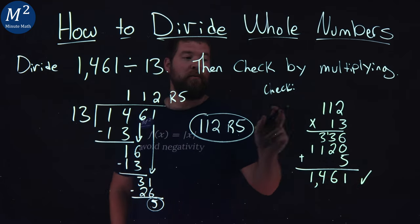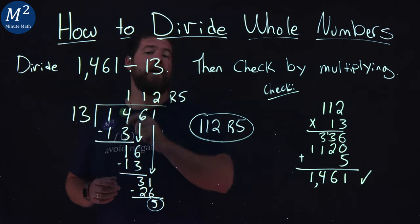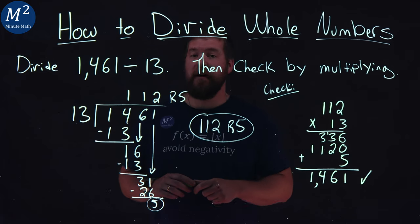Our check worked out. And so that confirms that our answer of 1,461 divided by 13 is 112 with a remainder of 5.